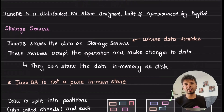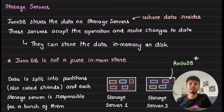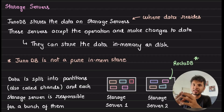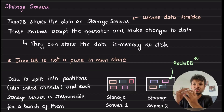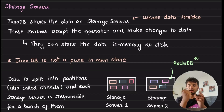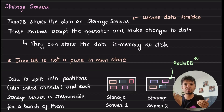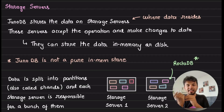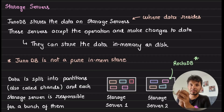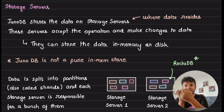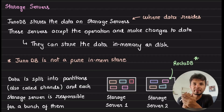The first component in JunoDB's architecture is called a storage server. Storage servers are your regular instances on which you are actually storing the data — the actual key-value data. Storage servers accept operations from other components like get a key, put a key, delete a key, and make the corresponding changes to the data.